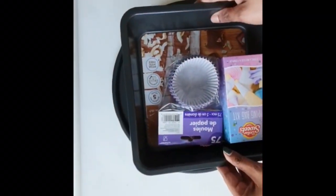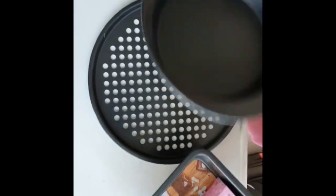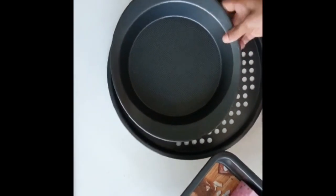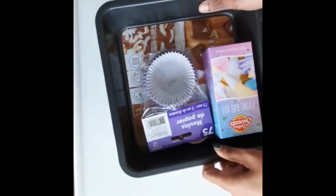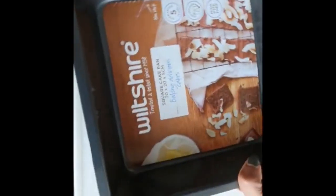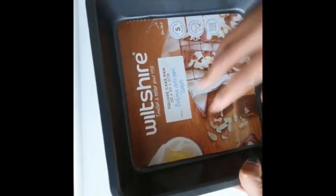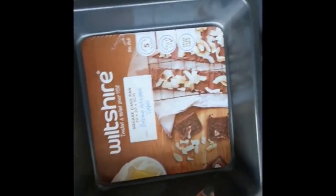Next thing, important thing is baking essentials. That is baking tray and cookie tray. So baking tray can be of different sizes. This is round one, this is rectangle one, so you can bake the cake in different sizes.